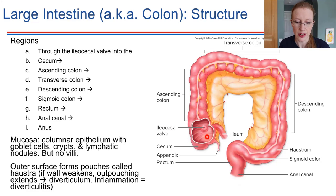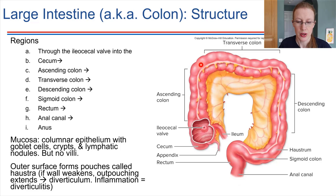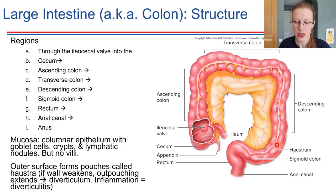The cecum is just this pouch down here. Once the chyme passes in through that valve, it will travel upwards through the ascending colon, then cut across through the transverse colon, and come down through the descending colon. Then it goes around through the sigmoid colon — it's called sigmoid because it has a kind of S shape, a curvy region of the large intestine.